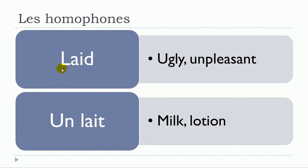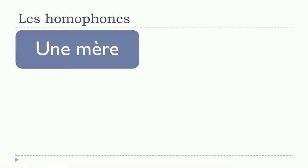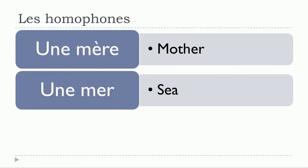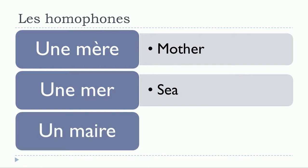Une mère, une mer, un maire. In both cases here you've got the feminine form, and then here it's masculine. Of course, it could be feminine as well, because mayors can be ladies as well.